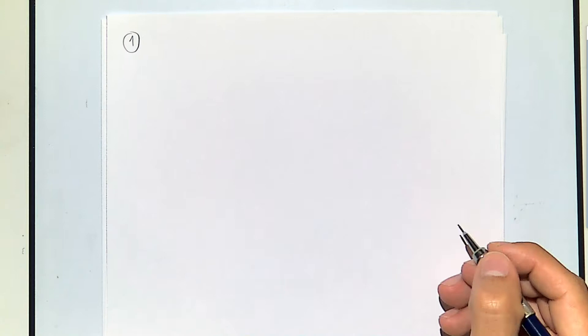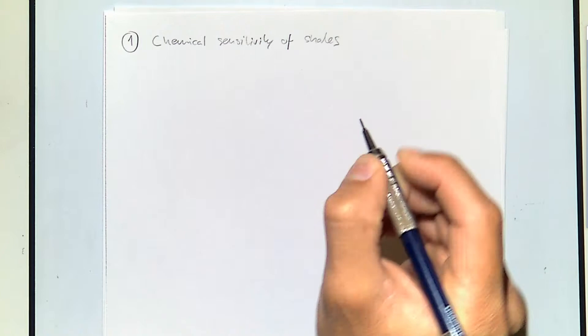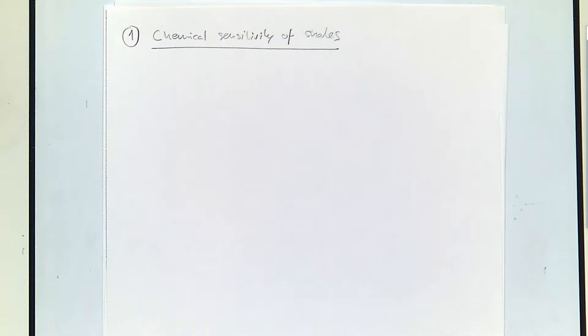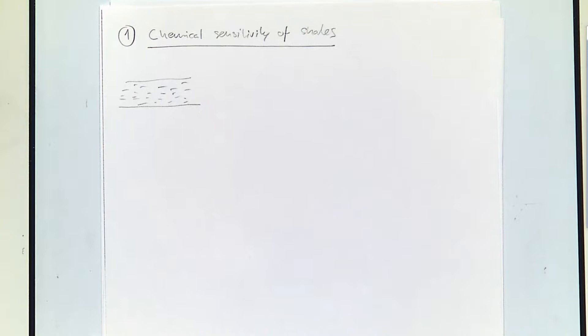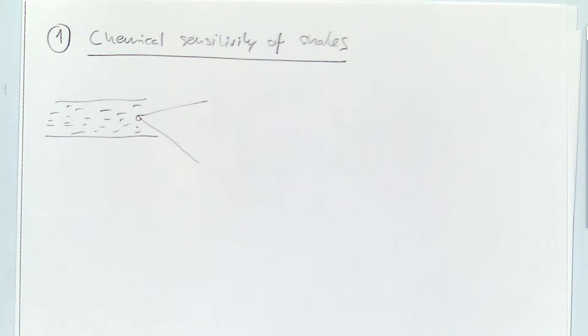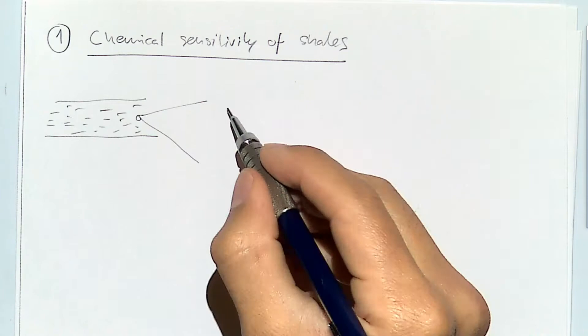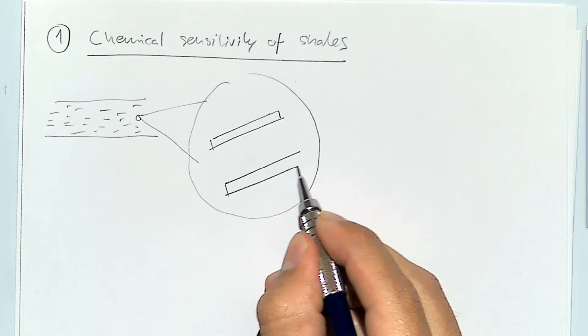Let's go into more detail about the chemical part with a few examples. Example number one: chemical sensitivity of shales. Let's consider that we have a shale rock. One of the major components of shale is clay. If we zoom in at the nanometer scale on a rock made mostly of clay, you will find that clay looks like a plate with surfaces that are negatively charged.